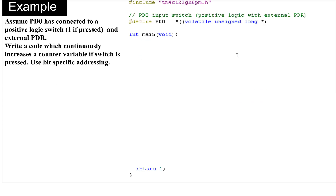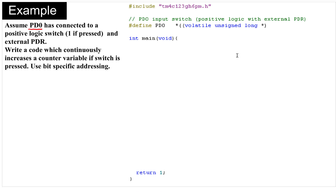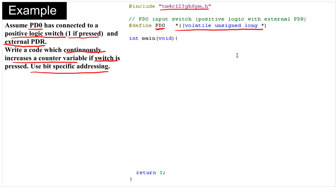Now let's do one more example. We assume PD0 is connected to a positive logic switch — pressing the switch drives the pin high. There is an external pull-down resistor, so no internal pull-down is needed. We need code that continuously reads the switch value and increments a counter variable. We will use bit-specific addressing. First, we include the symbolic register header file and define the bit-specific address for PD0: 0x4000 7004, where the offset 0x04 corresponds to bit zero.